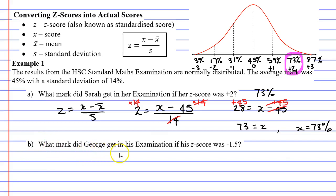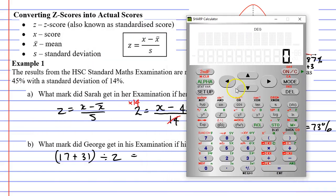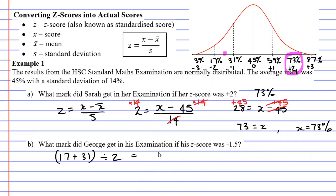It says, what mark did George get in his examination if his z-score was negative 1.5? There isn't negative 1.5 on our bell curve, but we know that it goes exactly halfway between the negative 1 and the negative 2. So we can quite easily work it out by figuring out what number is halfway between 17 and 31%. And we can do that quite easily by adding them together and then dividing by 2 at the end. So bringing up my calculator, I'm going to add 17 to 31, and I'm going to put it in brackets, which forces the calculator to add it before we divide it by 2. This comes out to 24. So George got a mark of 24% in his examination.